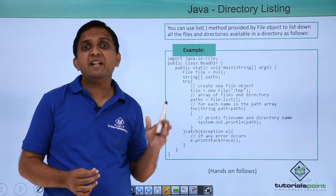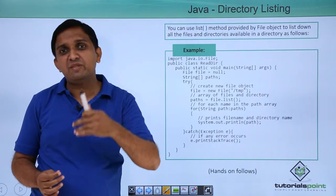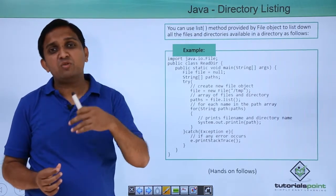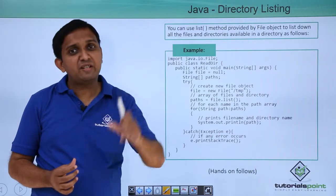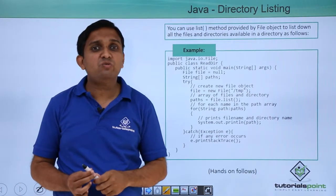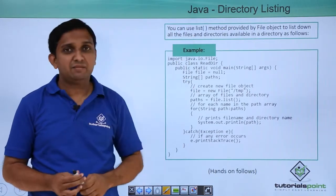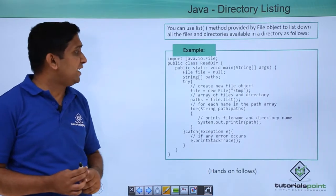Now suppose there is a directory and in that directory there are many files or subdirectories. If I want to list down all the files and subdirectories inside a particular directory, then I can make use of one method which is list method.